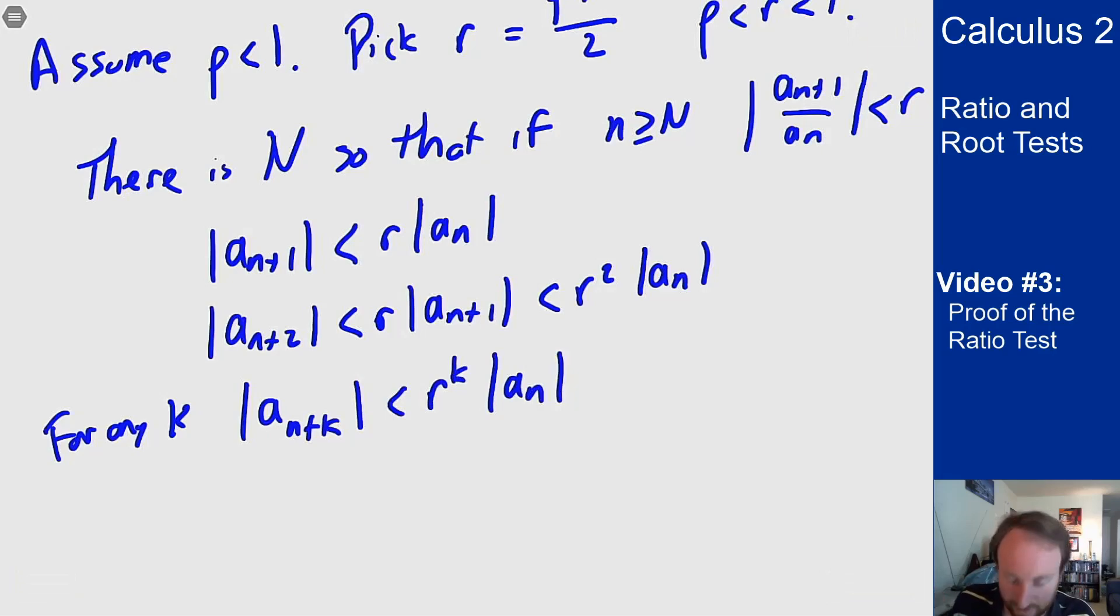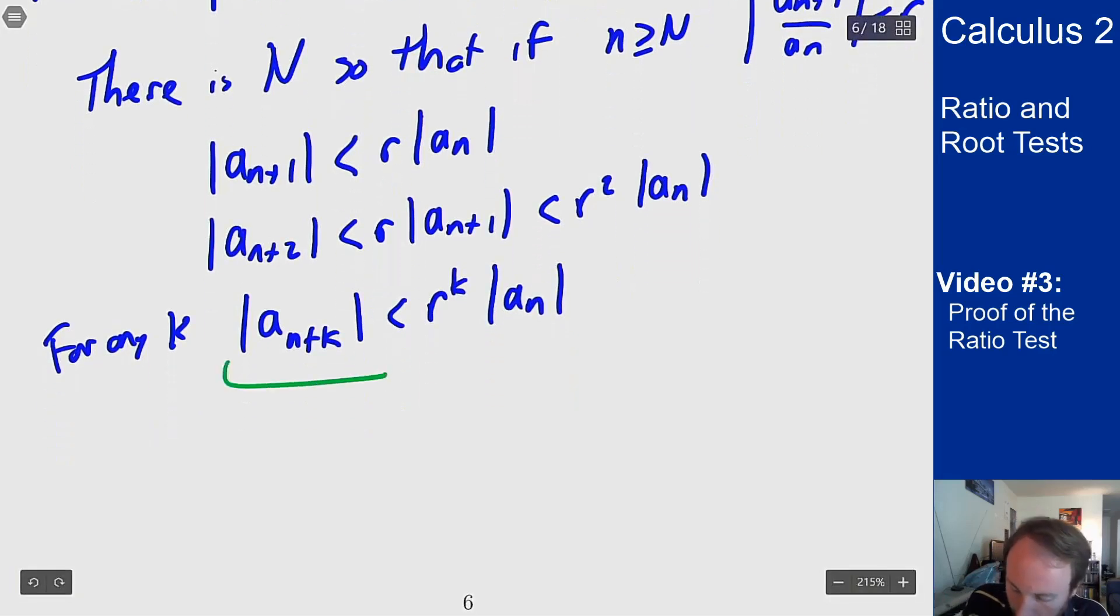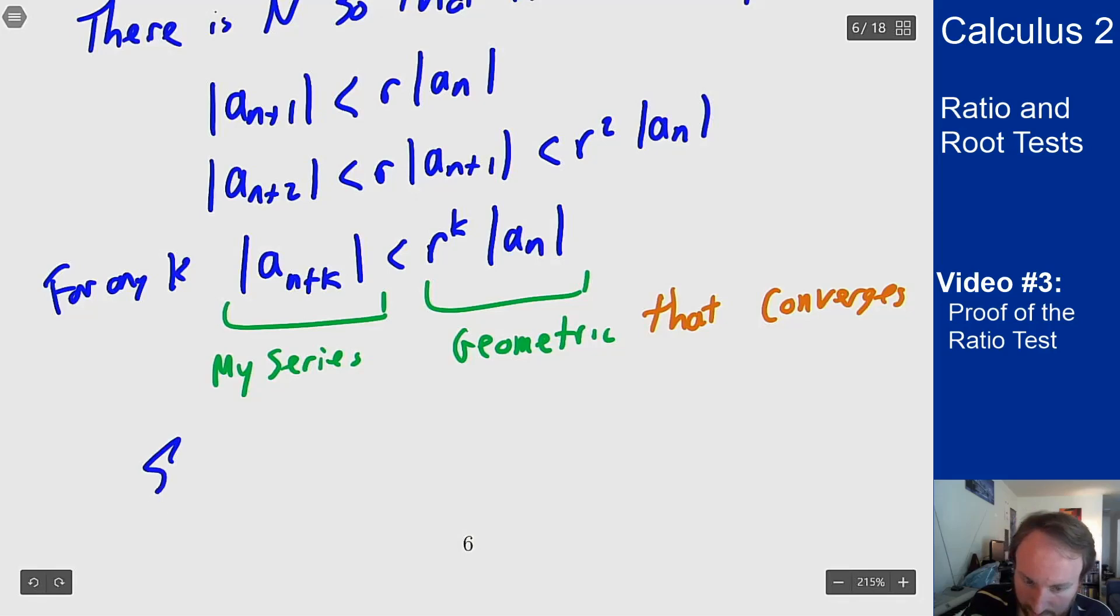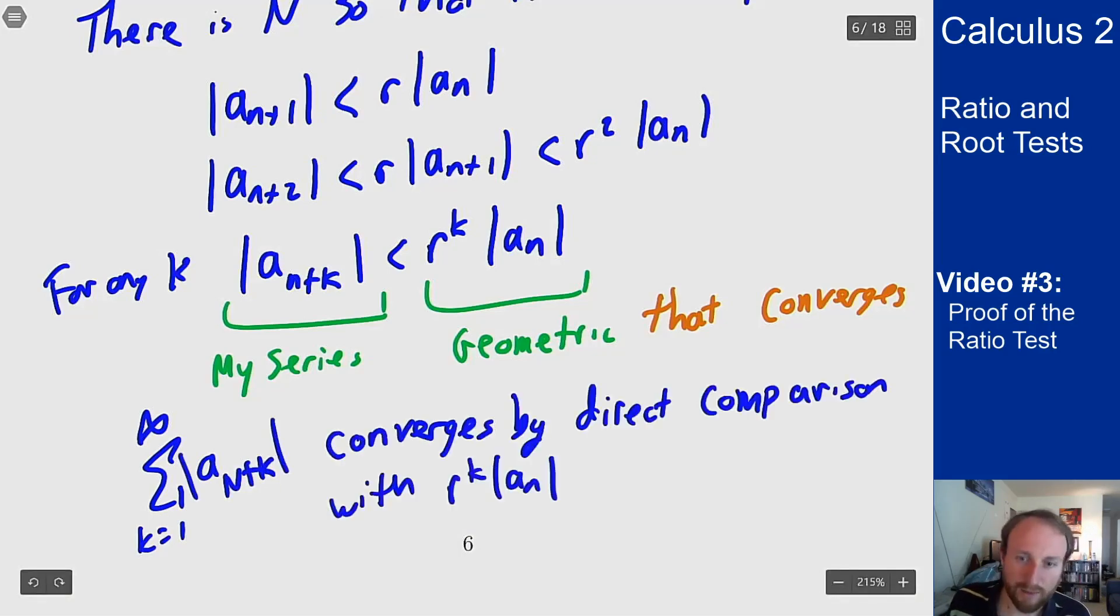Right, this here is my series, this here is a geometric series, and because r is less than one this converges. What this tells me is if I were to take the sum of all of the terms bigger than capital N, this will converge by direct comparison with the geometric series above.